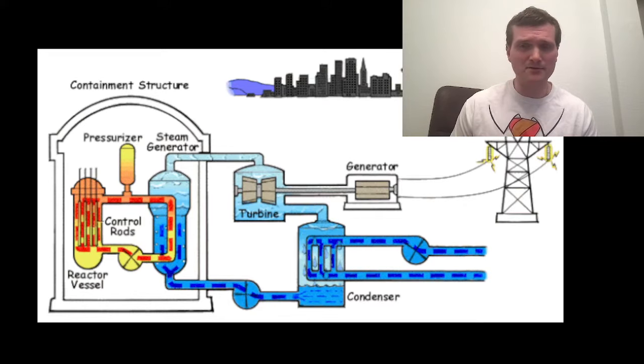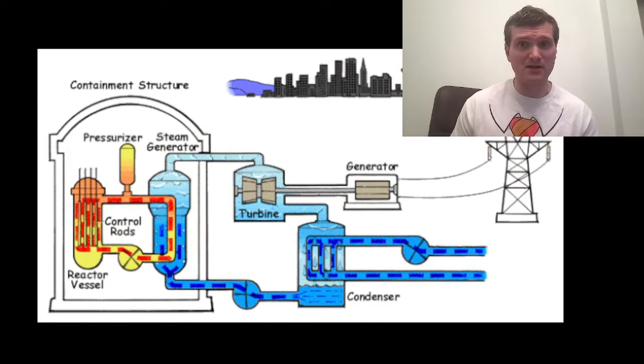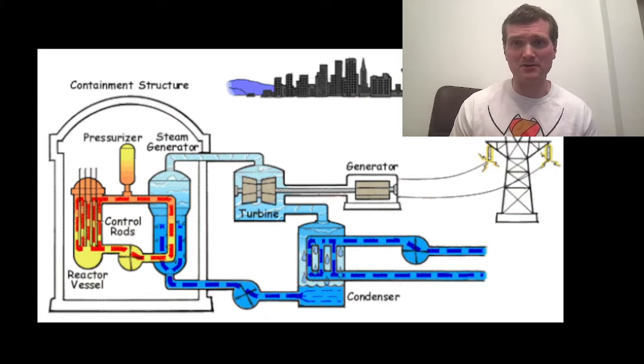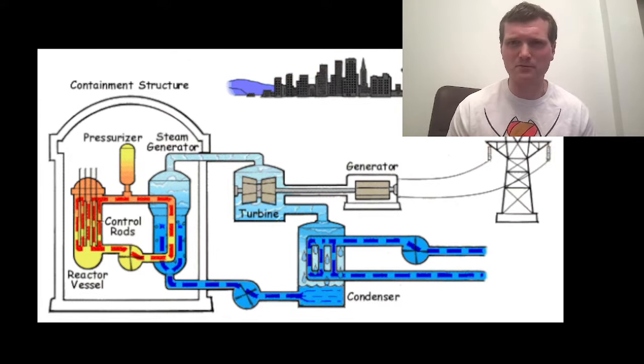And then after the immediate actions are done, they follow what's known as an emergency operating procedure. Where you check critical parameters such as the reactor coolant system pressure, temperature, pressurizer level, pressurizer pressure, steam generator levels.